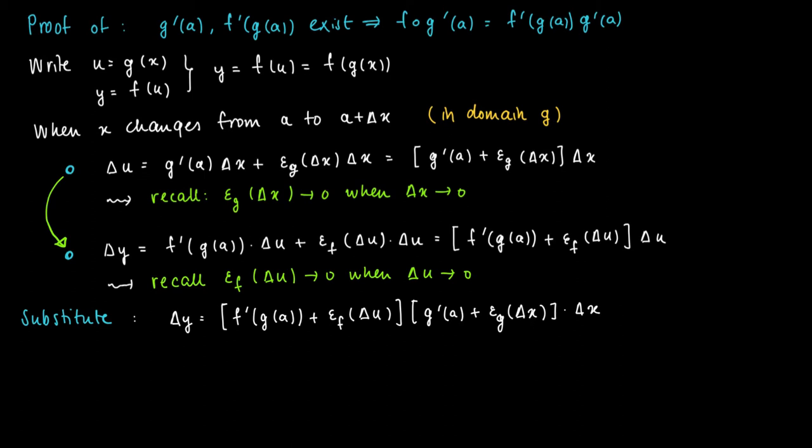So now for Δx unequal to zero, we may divide the left-hand side and the right-hand side by Δx. On the left-hand side we get Δy/Δx equals the product of two terms in the square bracket: [f'(g(a)) + ε_f(Δu)][g'(a) + ε_g(Δx)]. Which is this one.